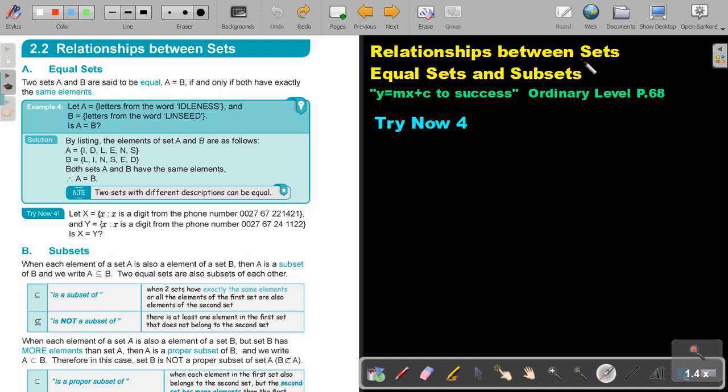Relationships between sets. We will focus on equal sets and subsets. You will find this on page 68 in the Mathematics Ordinary Level Textbook, Y equals MX plus C to success.